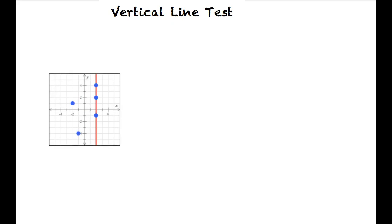This graph fails the vertical line test. We can draw a line that intersects the graph more than once, so it does not represent a function.